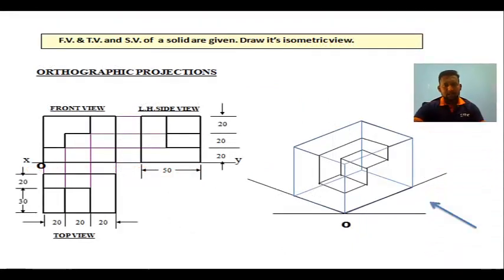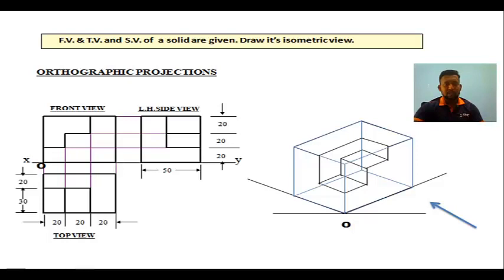This is our current topic. On the left-hand side you have the left-hand side view, front view, and top view — at the top it is written 'orthographic projections'. Your question is what you see on the left: you will be given a front view, a top view, and a side view — either left-hand side or right-hand side — and you will be asked to draw an isometric view, which you see on the right-hand side.